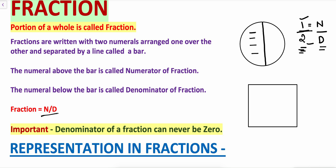A fraction is equal to the numerator by denominator. One important thing: the denominator of a fraction can never be zero. So you cannot write three by zero — this is not possible.